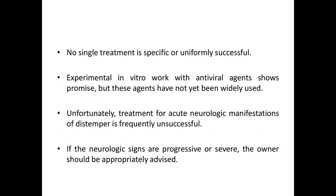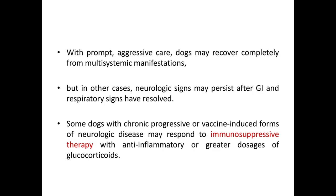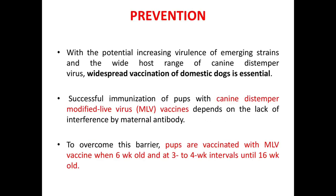No single treatment is specific or uniformly successful. Experimental in vitro work with antiviral agents shows promise but these agents have not yet been widely used. Treatment for acute neurologic manifestations of distemper is frequently unsuccessful; if neurologic signs are progressive or severe, the owner should be appropriately advised. With prompt aggressive care, dogs may recover completely from multisystemic manifestations, but neurologic signs may persist after GI and respiratory signs have resolved. Some dogs with chronic progressive or vaccine-induced forms of neurologic disease may respond to immunosuppressive therapy with anti-inflammatory or greater doses of glucocorticoids.